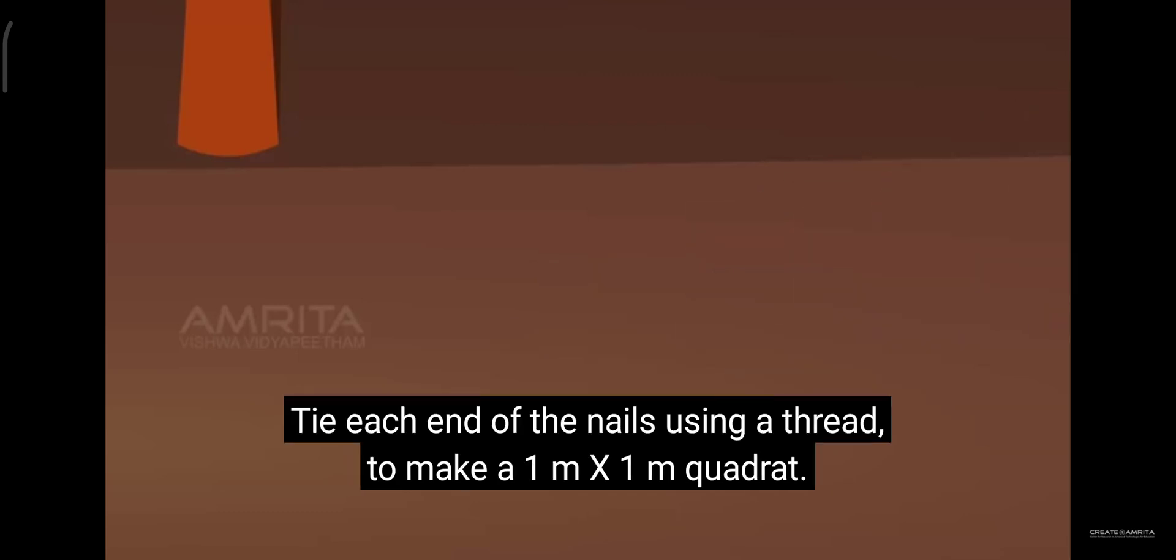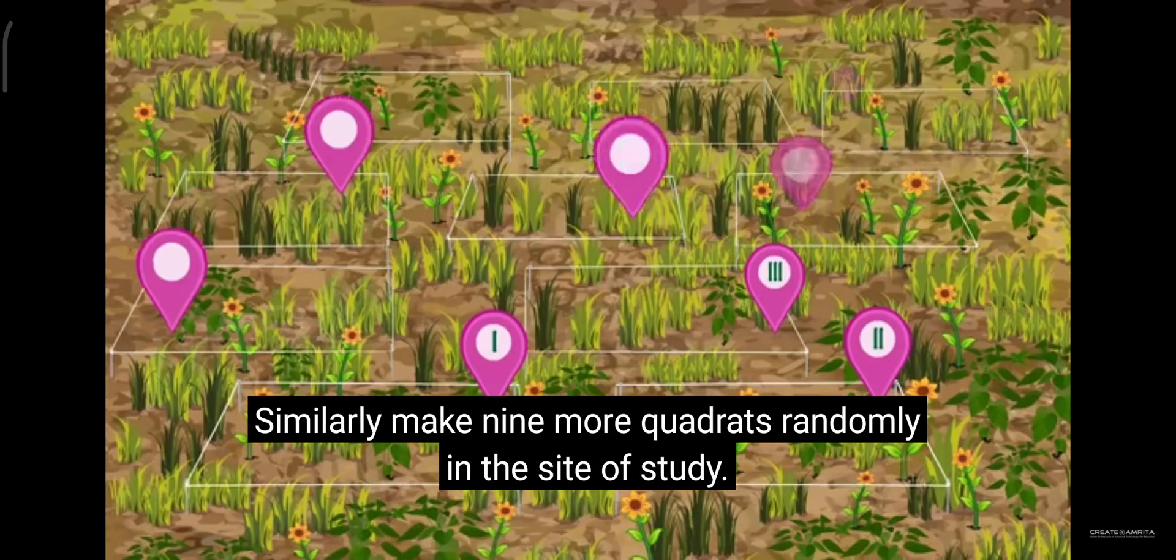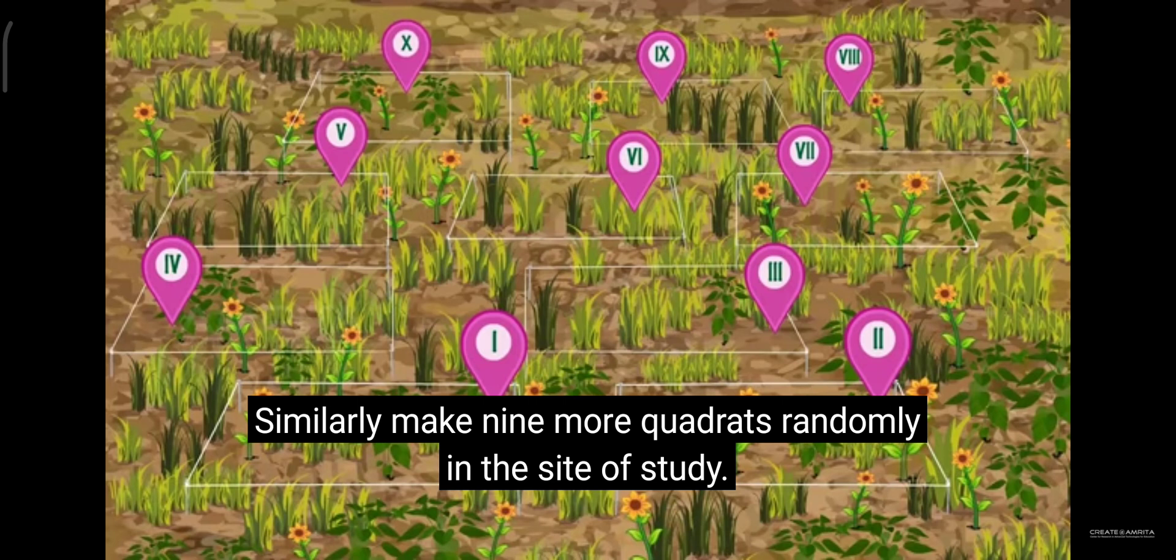Tie each end of the nails using a thread to make a quadrate. Similarly, make nine more quadrants randomly in the site of study.